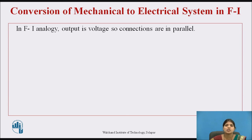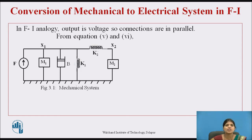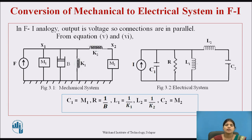Conversion of mechanical to electrical system in force current analogy: in FC analogy, the output is in terms of voltage, so connections are in parallel. From Equations 5 and 6 we can draw the electrical system. In the mechanical system M1, B, and K1 are connected in parallel, so the same elements are connected in parallel in the electrical system. C1 is equivalent to M1, R to 1/B, L1 to 1/K1, L2 to 1/K2, and C2 to M2.